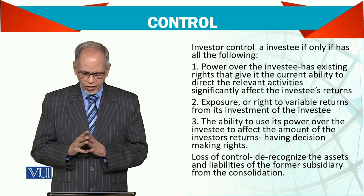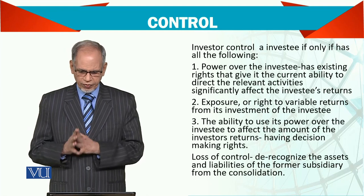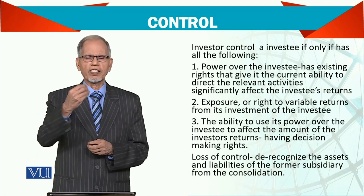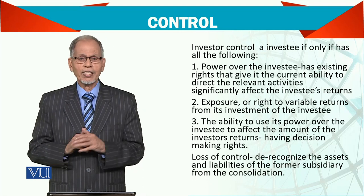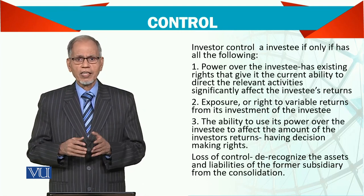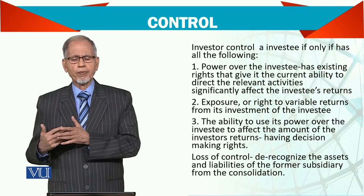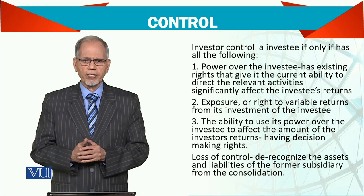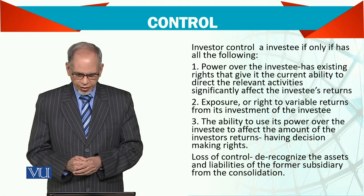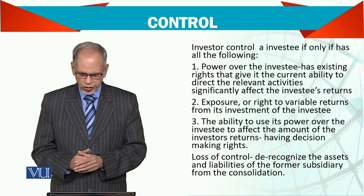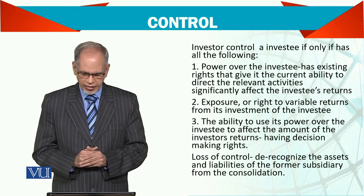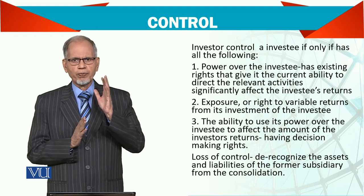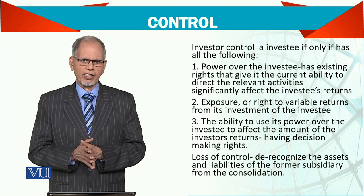Number two: exposure or right to variable returns from the investment in the investee. Normally when we invest, we expect a fixed percent profit, but in this case it is variable — meaning whatever profit the subsidiary generates, the more it earns the more you get. Number three: the ability to use its power over the investee to affect the amount of investor returns — having decision-making rights, meaning you as the parent company have decision-making rights.